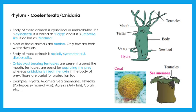Corals and sea anemone are more examples. Colonies of specific cnidarians are known as coral reefs, found in the ocean. A precious stone — coral — is used in jewelry, and ash obtained from corals is used in Ayurvedic medicine.